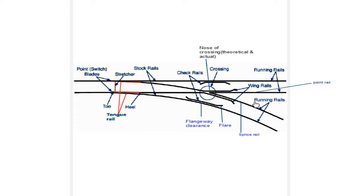First we should know what points and crossings are. Points and crossings are arrangements by which different routes, either parallel or diverging, are connected and afford the means for a train to move from one route to another. The arrangement made to allow the train to diverge properly is known as points and crossing.